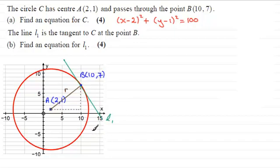And if we're to find its equation, I'm going to go for the form of a straight line: y - y₁ = m(x - x₁), where x₁, y₁ is a point on the line. And that's going to be the point B. M is the gradient of the line L₁.